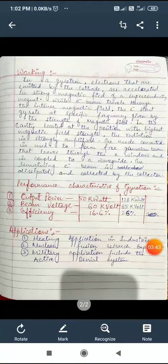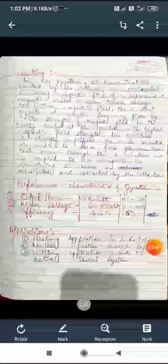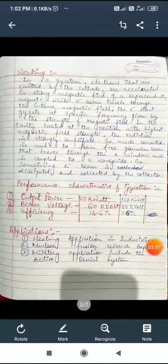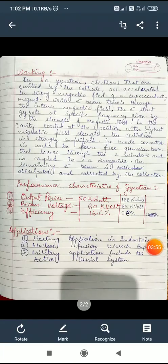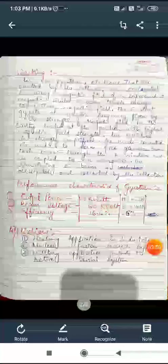The radiation and the electron beam is used to form a free Gaussian beam that leaves through window and coupled to waveguide. The remaining electron beam is dissipated and collected by the collector terminal collector region.